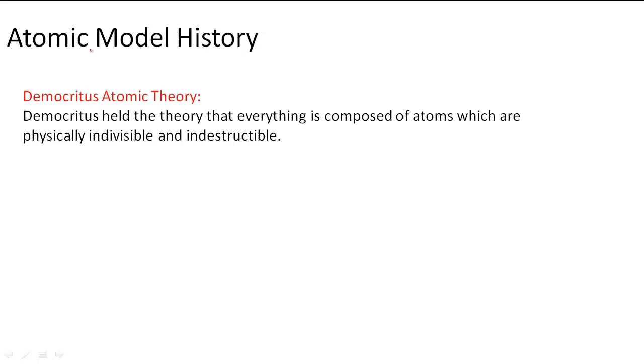First let's start with Democritus. Democritus was a Greek philosopher who thought that all matter was composed of small, very very small, indivisible and indestructible things called atoms, or he named it the Greek word atomos which we get atoms from and atomos means uncuttable or indivisible. So that's what Democritus thought, he thought all matter was made up of that.